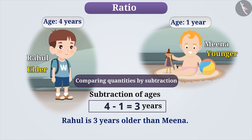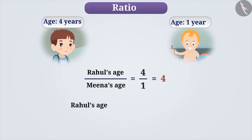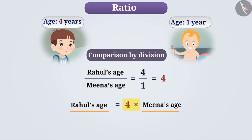We can also compare their ages using another method. If we divide Rahul's age by Meena's age, we get 4 as the result. This shows that Rahul's age is 4 times the age of Meena. Here, we have compared two quantities based on how many times one quantity is of the other quantity.